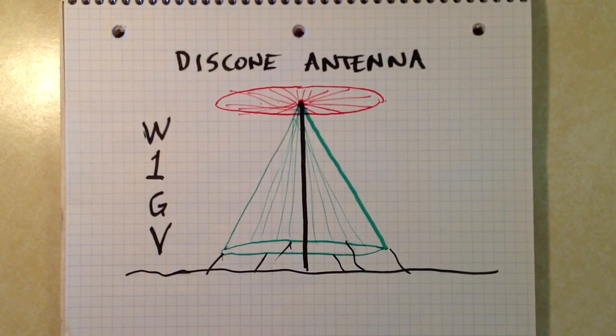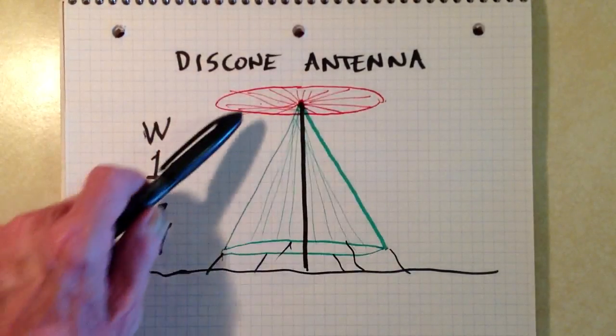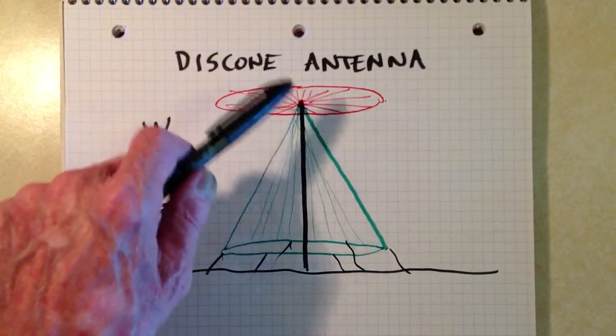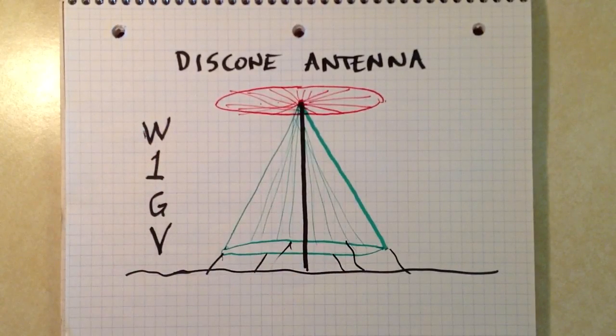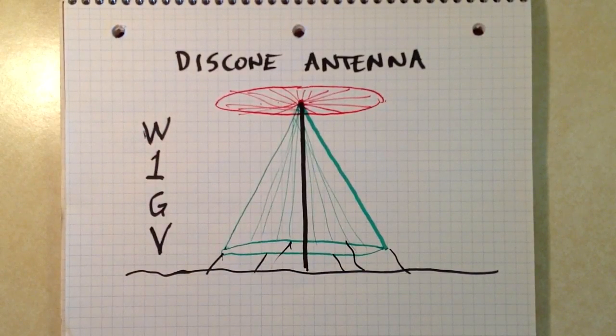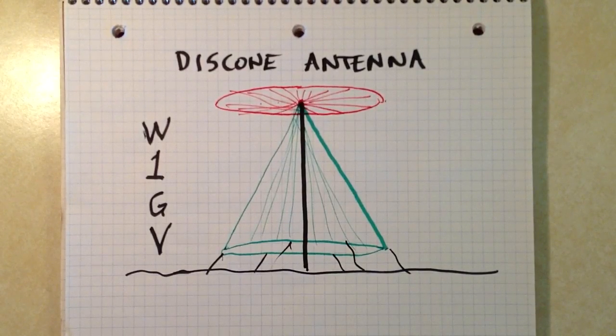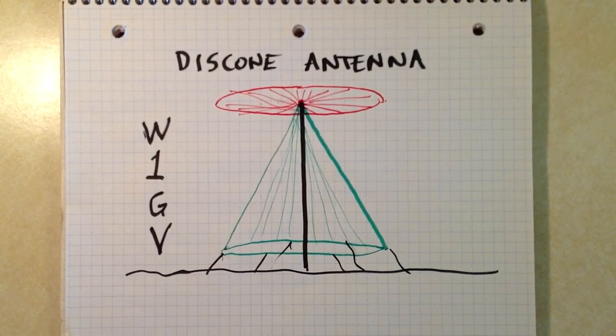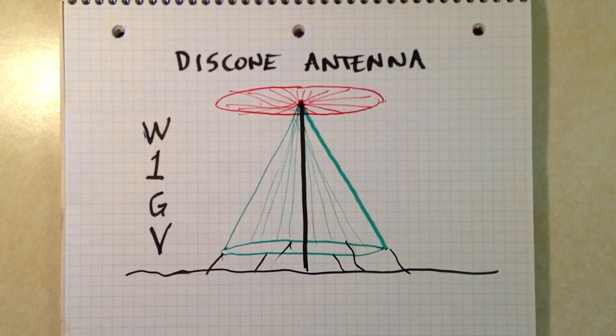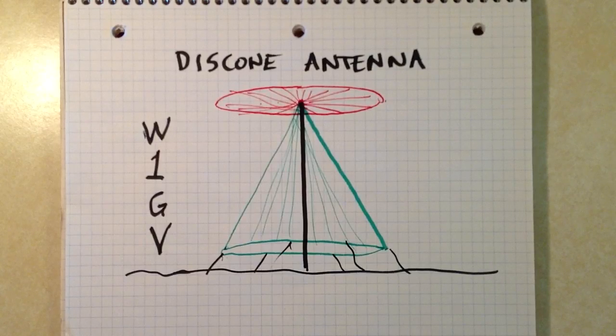To talk about a variant on the conical monopole antenna. It's called the disc cone because it comprises a disc and a cone. In some sense, it is an upside down conical monopole, but not exactly. You can see, if you watch the video on the conical monopole, that there are some fundamental structural differences.